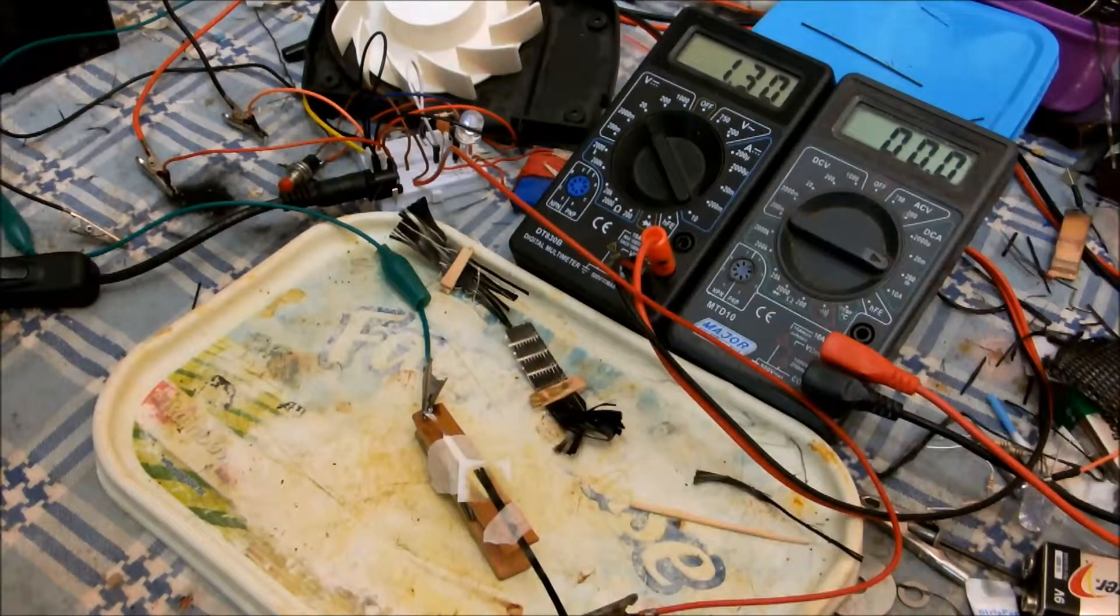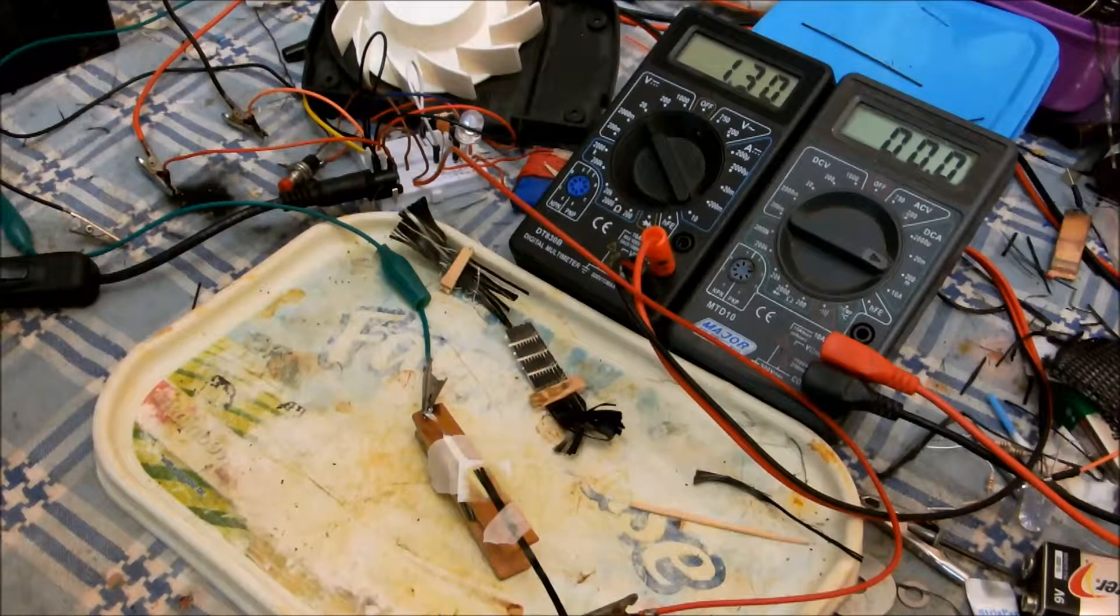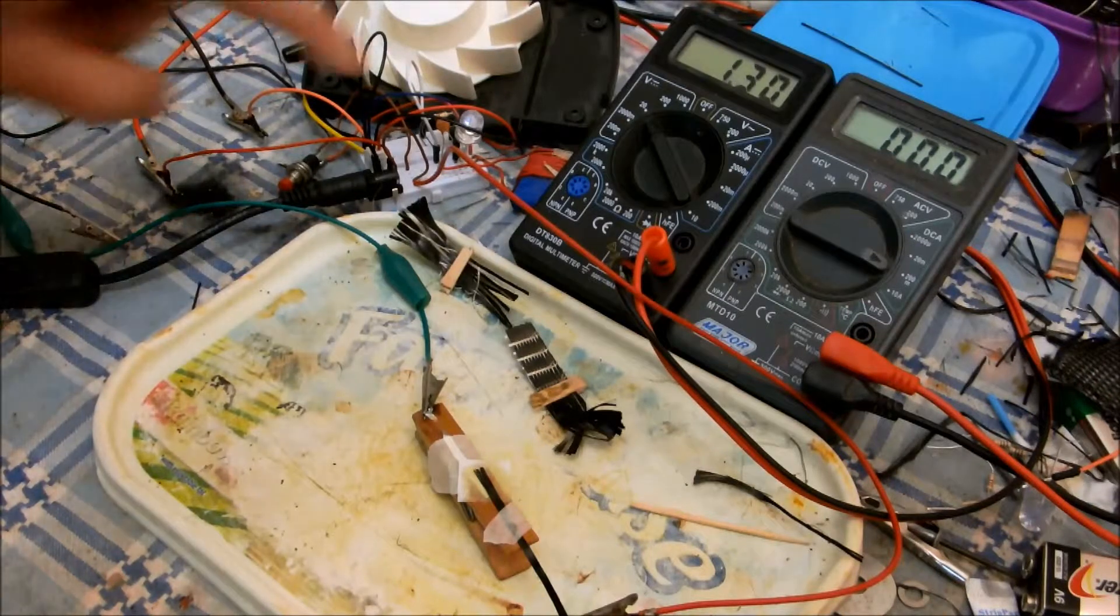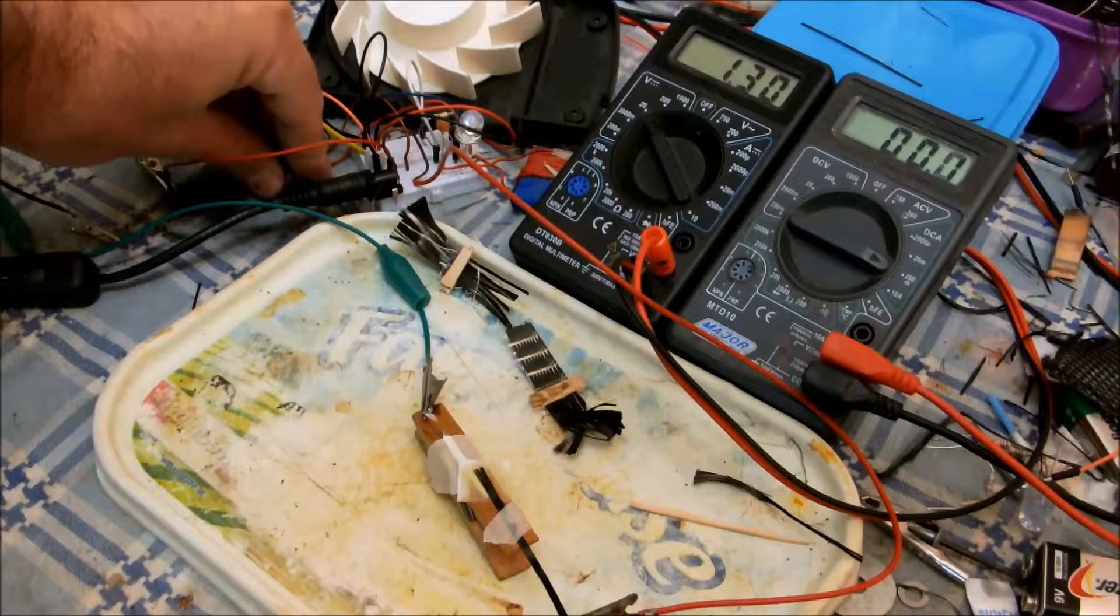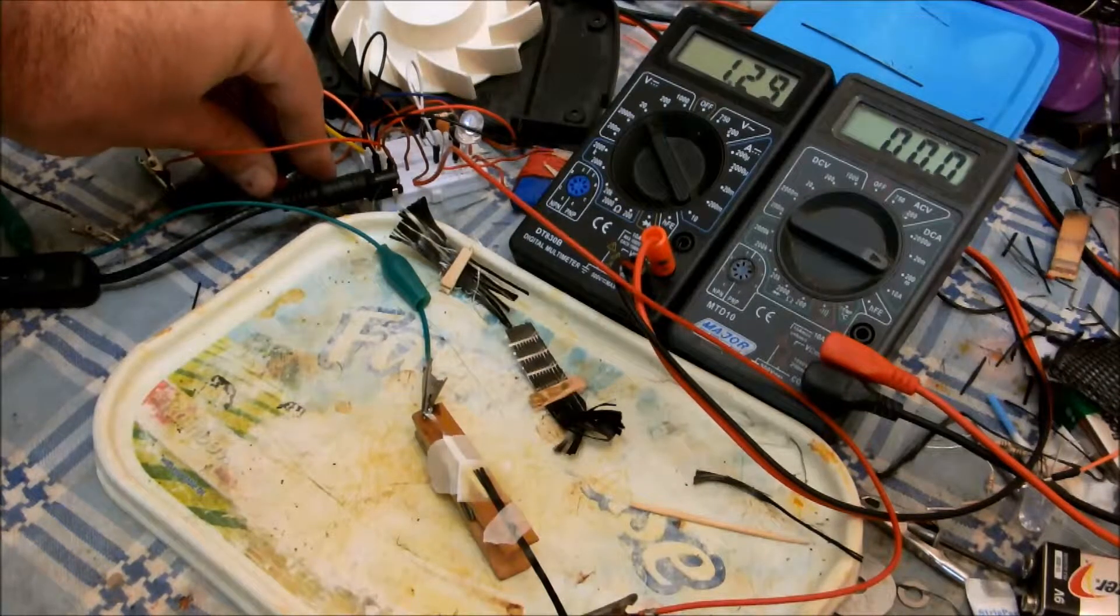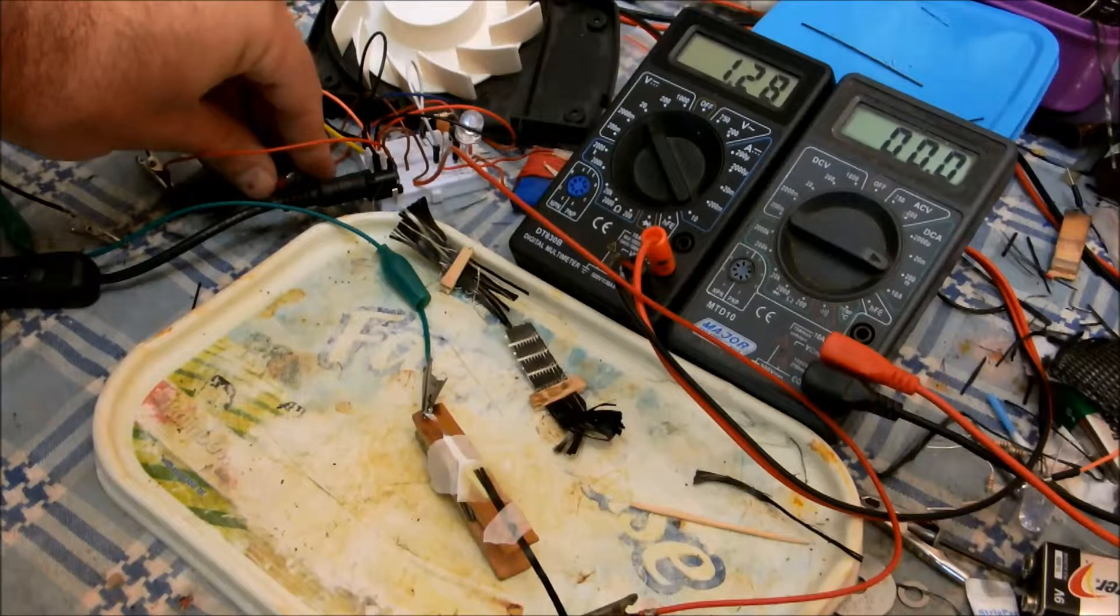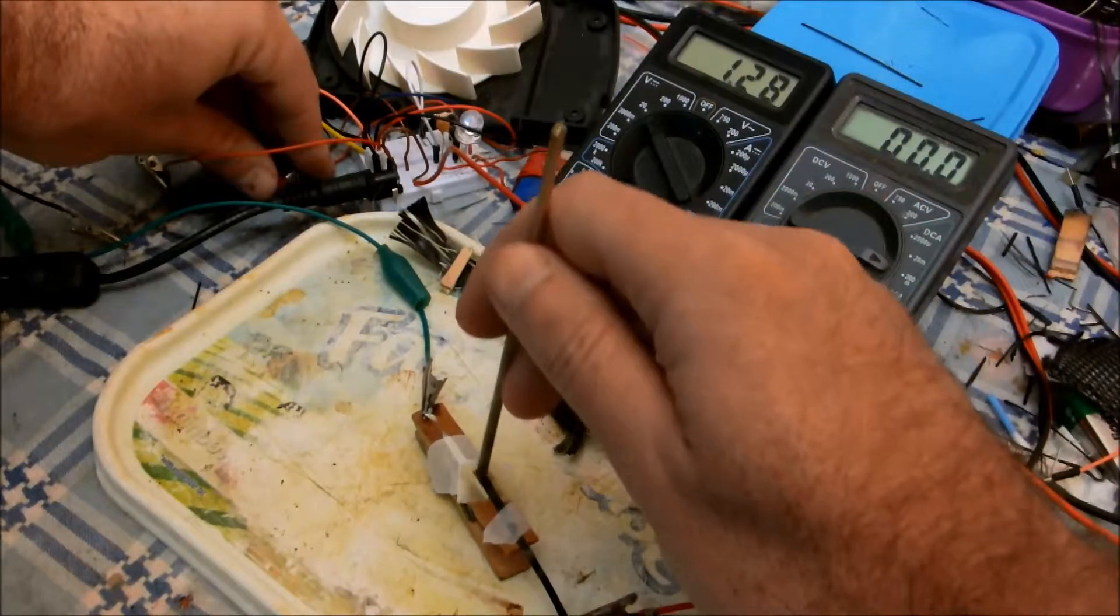Look at the voltage there, 1.3 volts, and I've got a small joule thief circuit. It's still not quite producing enough current to light the LED. Let's give it a bit of a jab there.